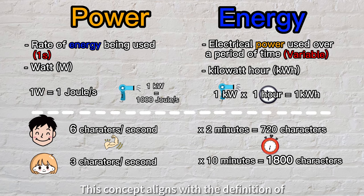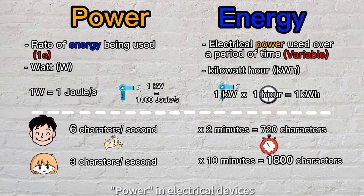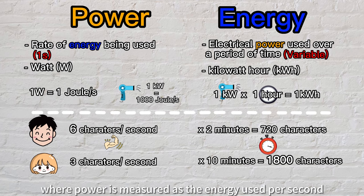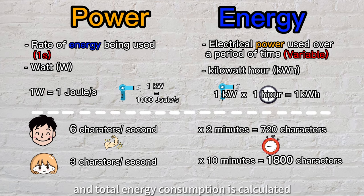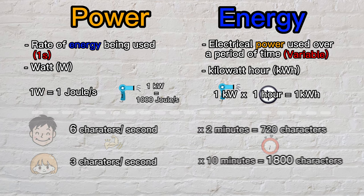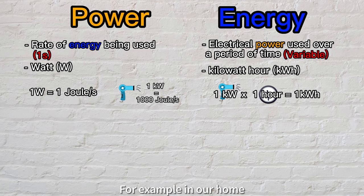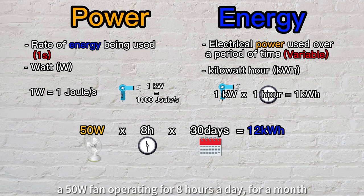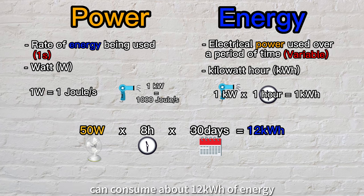This concept aligns with the definition of power in electrical devices, where power is measured as the energy used per second, and total energy consumption is calculated over a given period of time. For example, in our home, a 50 watts fan operating for 8 hours a day for a month can consume about 12 kilowatt hours of energy.